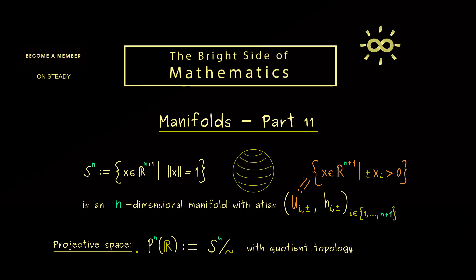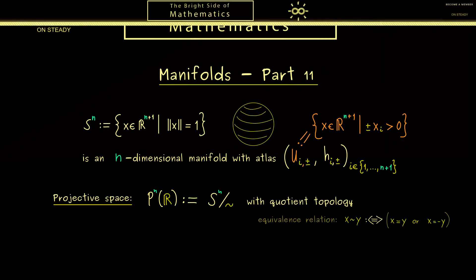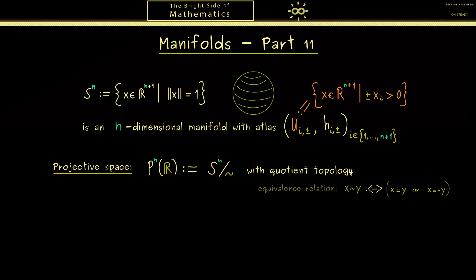There we learned that the projective space P^n(R) is given by a quotient space with the quotient topology. More precisely, the equivalence relation was defined on the n-dimensional sphere. Two points x and y are equivalent if they are at antipodes—in other words, this means that x is equal to minus y. Hence this here is a well-defined equivalence relation and it gives us the projective space as a quotient space. Moreover, in this case we have a canonical projection which is also continuous.